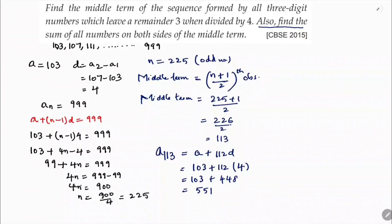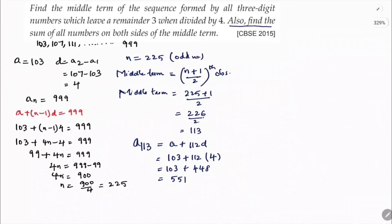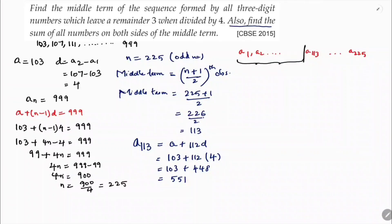Out of the total 225 terms, there are 112 terms before a₁₁₃ and 112 terms after it. To find the sum of terms on the left side, we calculate S₁₁₂. The last term on the left side is a₁₁₂.